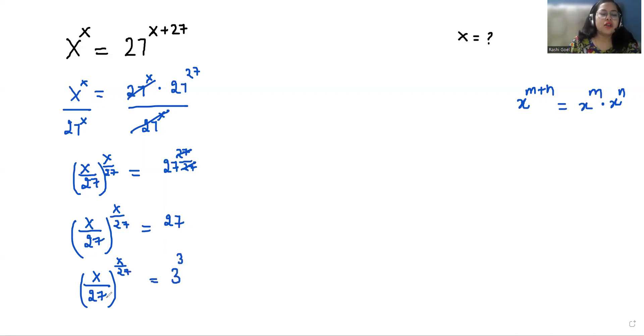Now if we compare both sides, the value of x by 27 is 3. Now I'm going to multiply with 27 both sides.